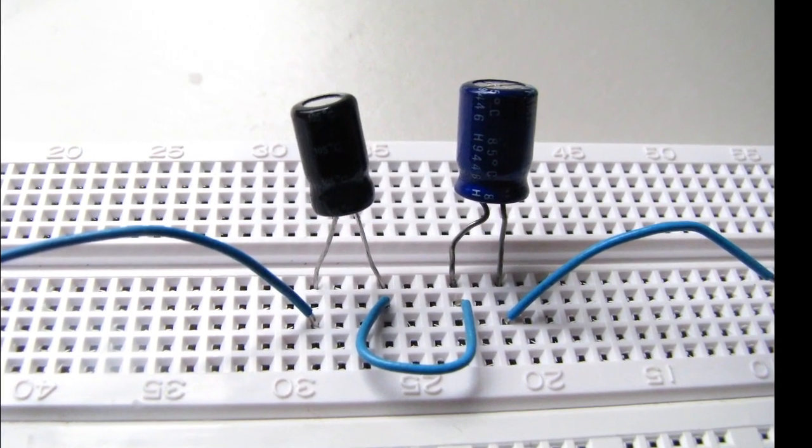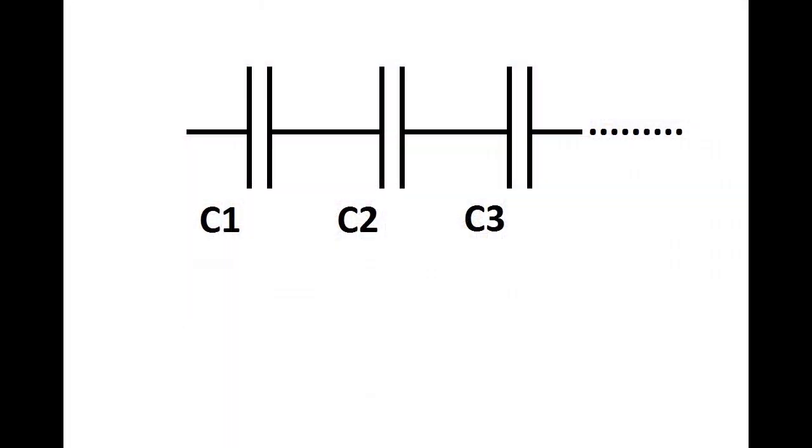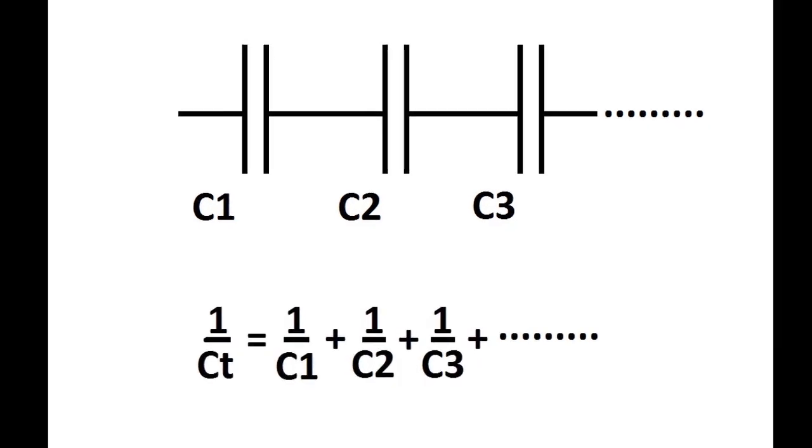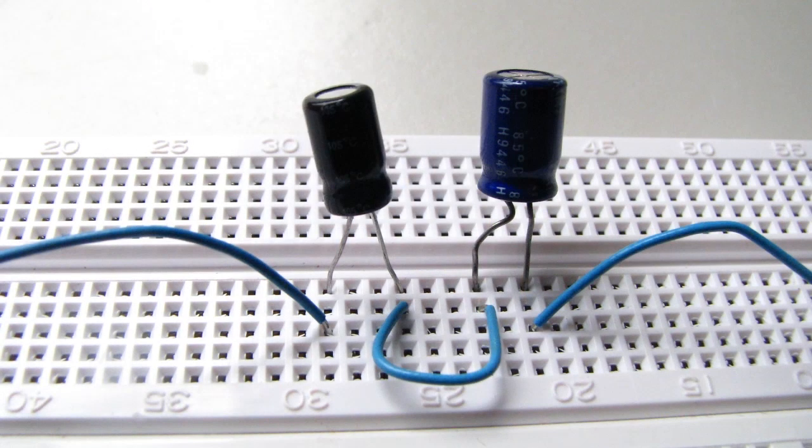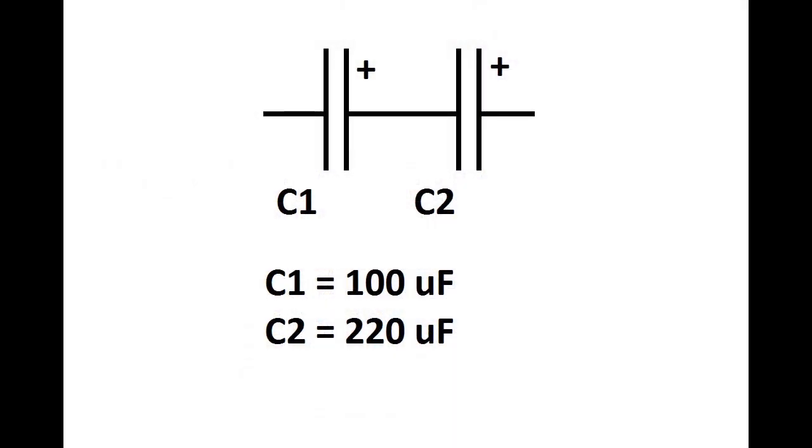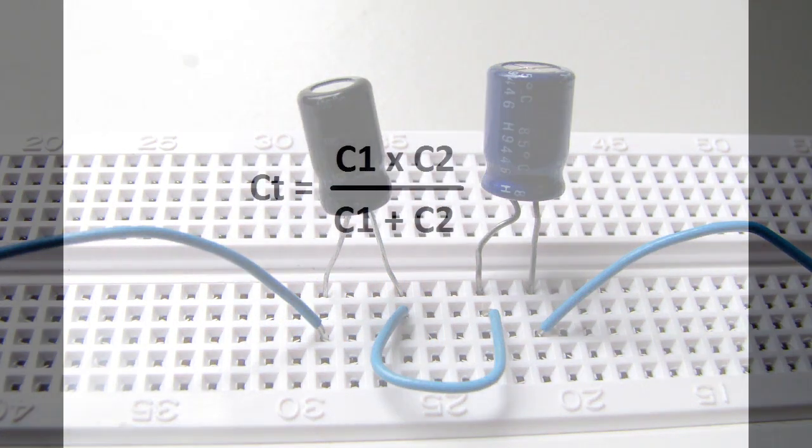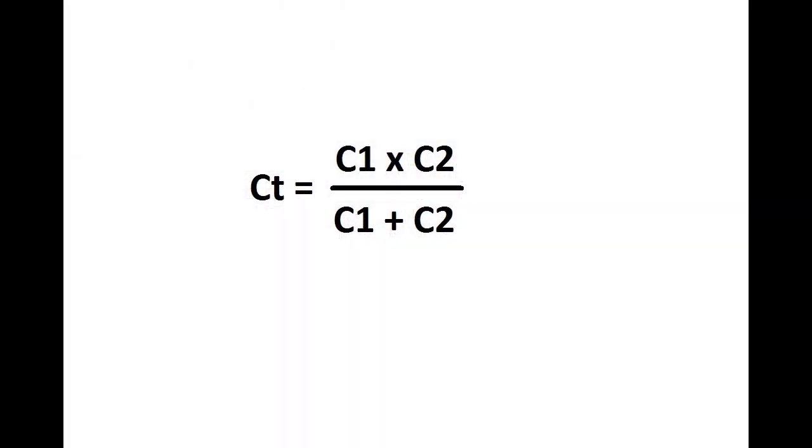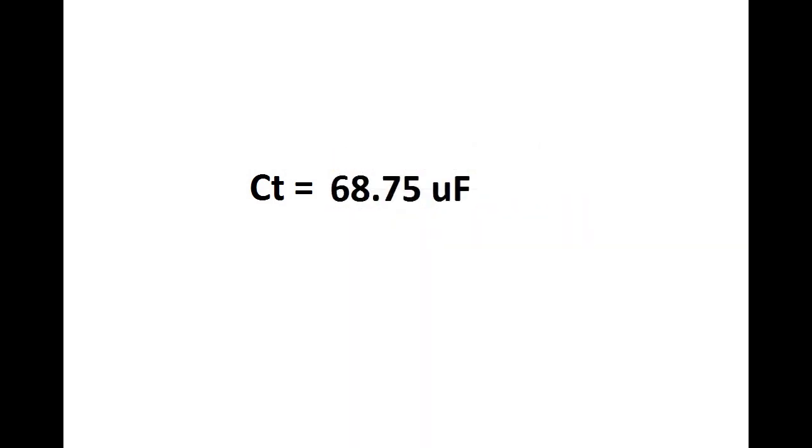Calculating the combined value of capacitors connected in series is a little more complicated. These capacitors are connected in series, end to end. To calculate equivalent capacitance, you need to know how to manipulate this formula. In this example, we have two capacitors connected in series. C1 is 100 microfarads. C2 is 220 microfarads. There are only two capacitors involved here, so the formula reduces to this. Plugging in the numbers, we get this. The equivalent capacitance is 68.75 microfarads.